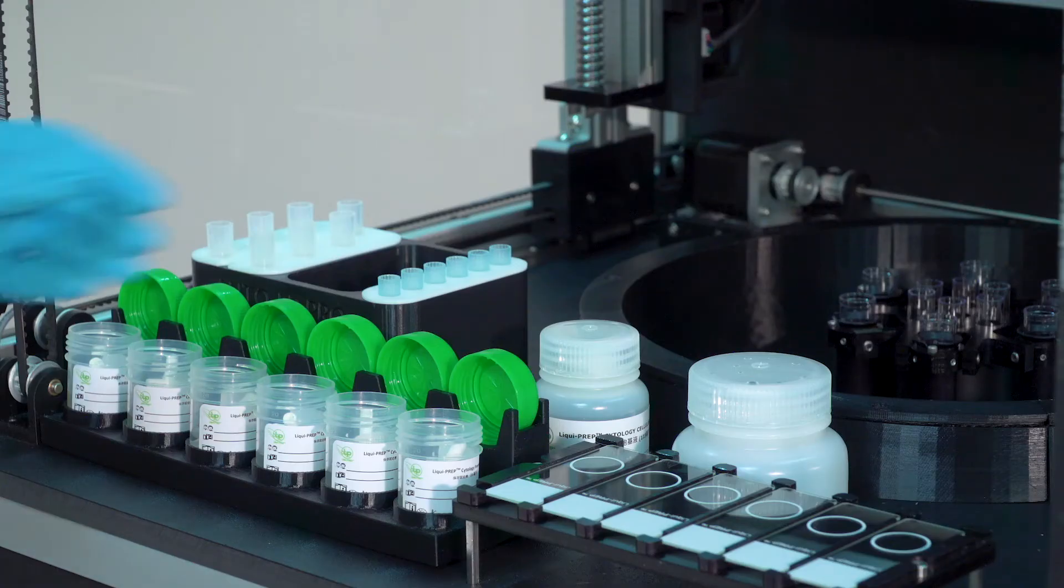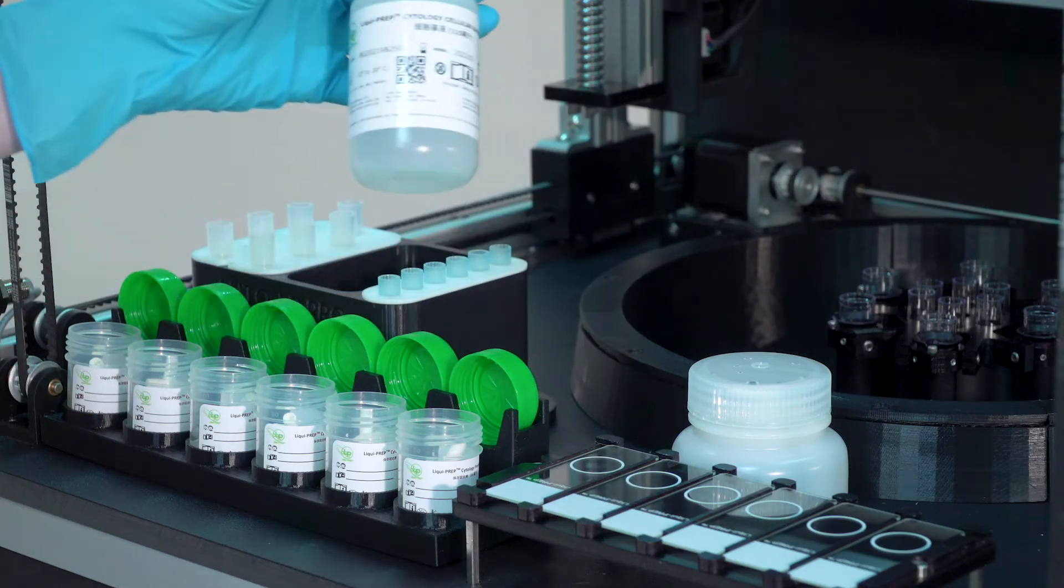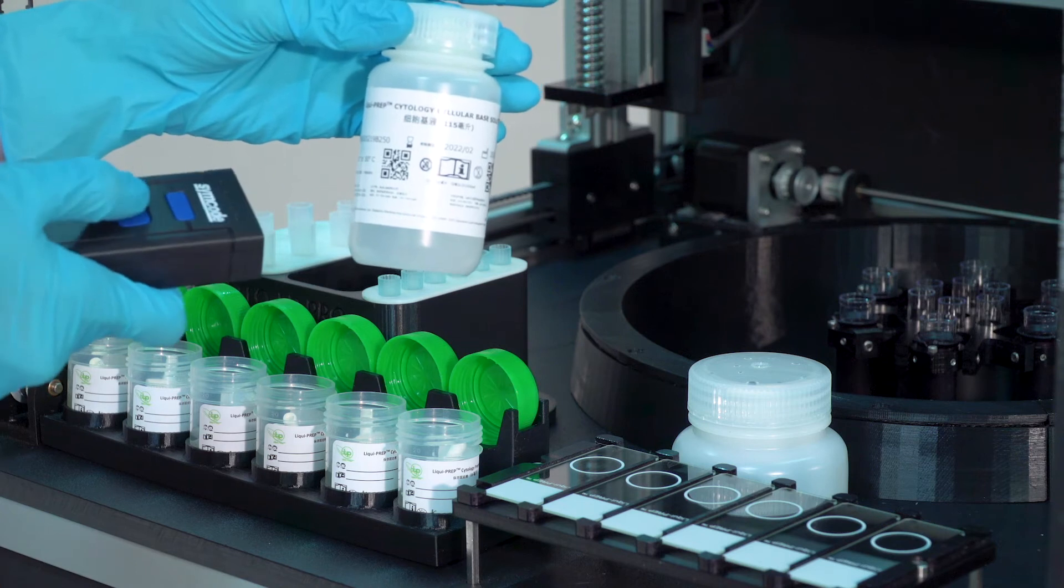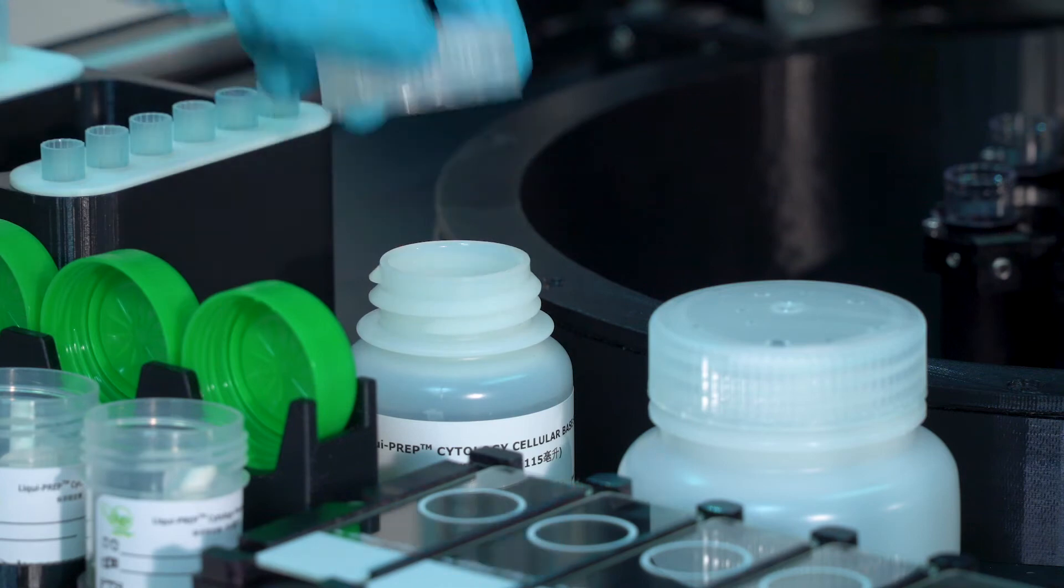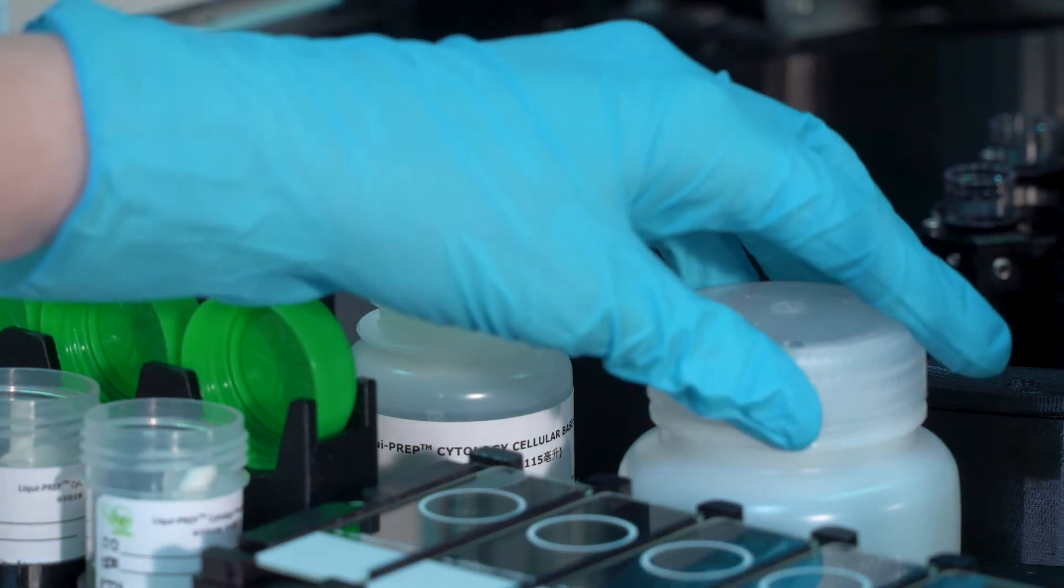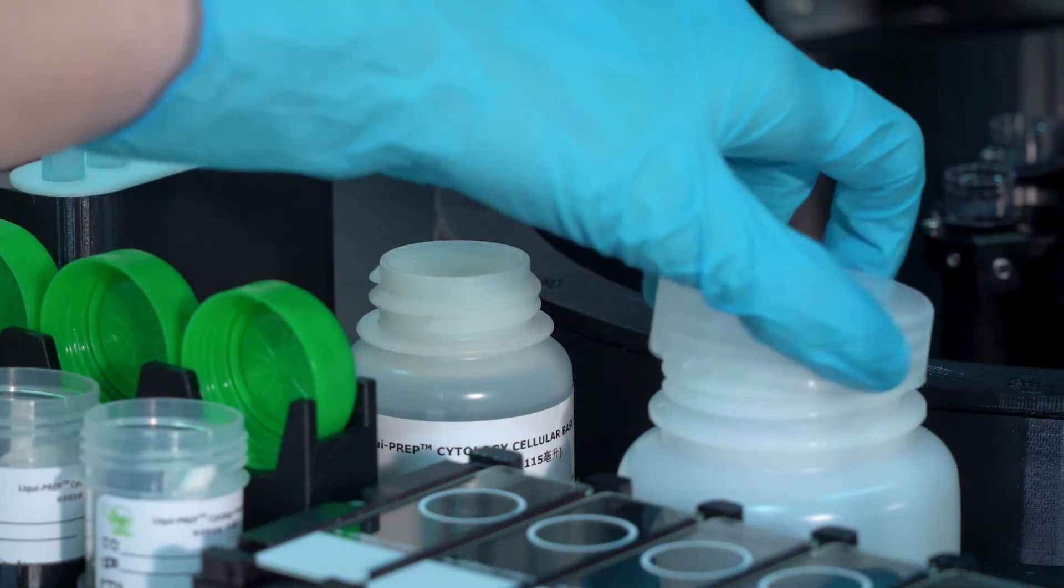Scan both the LIQUIPREP cleaning solution bottle barcode and the LIQUIPREP cellular base solution bottle barcode using the handheld barcode scanner. Remove the caps from the reagent bottles and place both bottles into the AutoLP Pro.